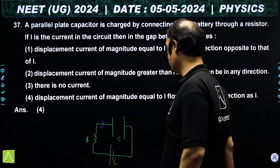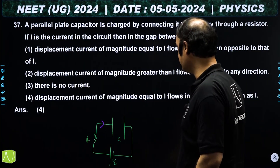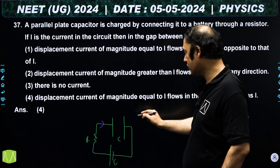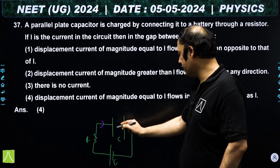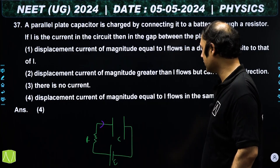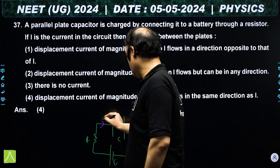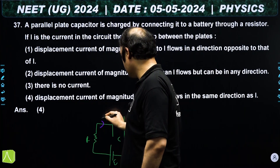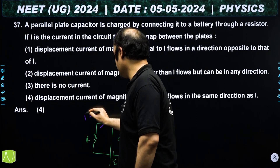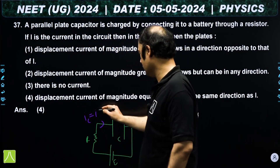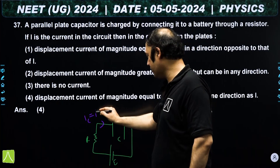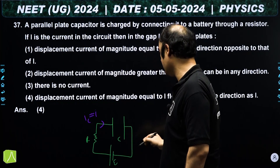Question 37: a parallel plate capacitor is charged through a resistance — this is an RC charging circuit. At any general time t, current flows through the wire. This is called conduction current.